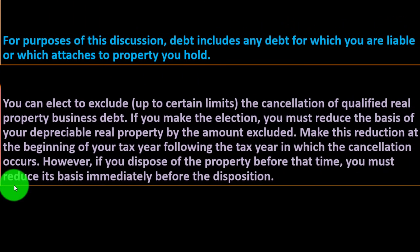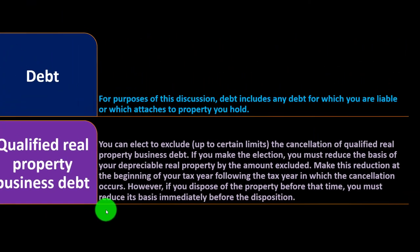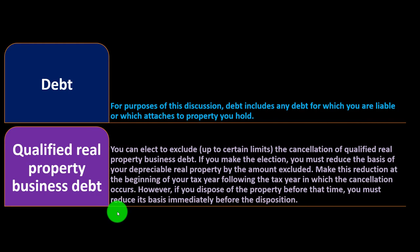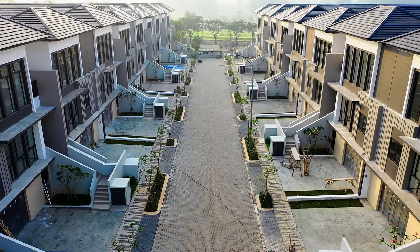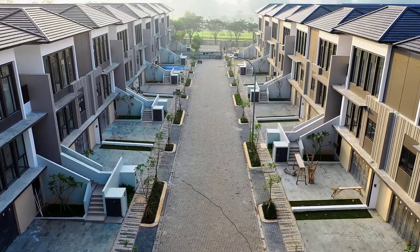You can elect to exclude, up to certain limits, the cancellation of qualified real property business debt. If you make the election, you must reduce the basis of your depreciable real property by the amount excluded. Make this reduction at the beginning of your tax year following the tax year in which the cancellation occurs. However, if you dispose of the property before that time, you must reduce its basis immediately before the disposition.